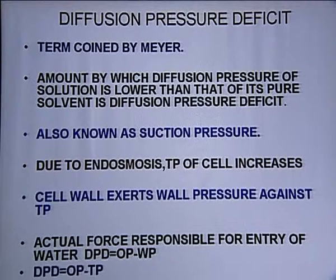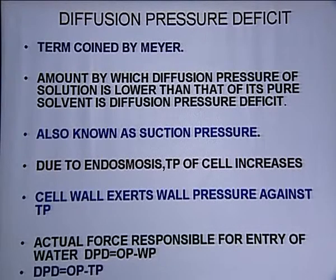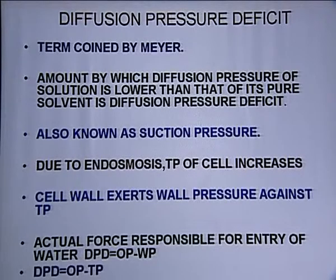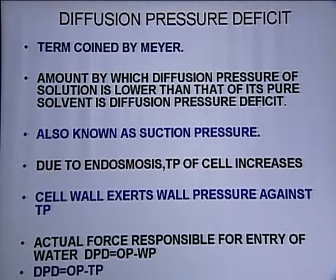The tendency of particles — how they diffuse from high concentration to lower concentration — this is diffusion pressure. Now, diffusion pressure deficit, which we will call DPD in short: the amount by which the diffusion pressure of a solution is lower than that of its pure solvent is called diffusion pressure deficit.